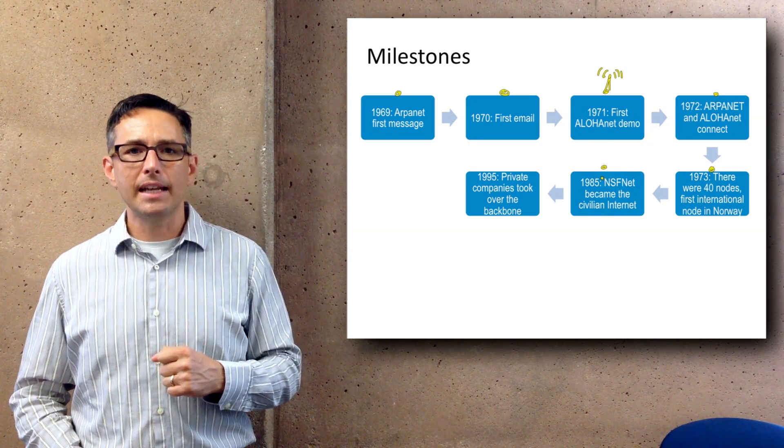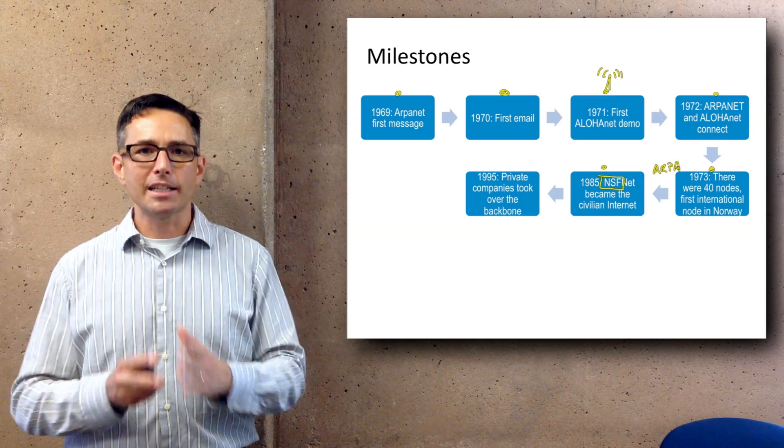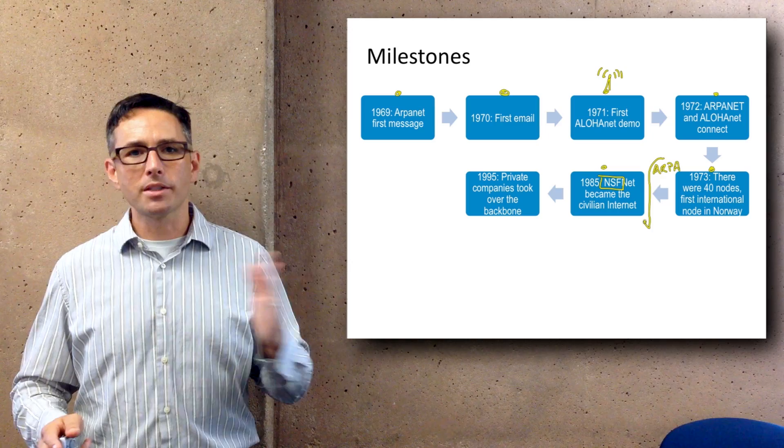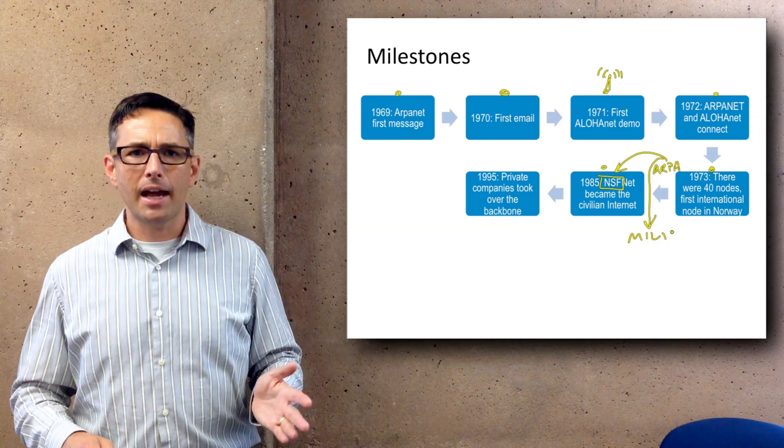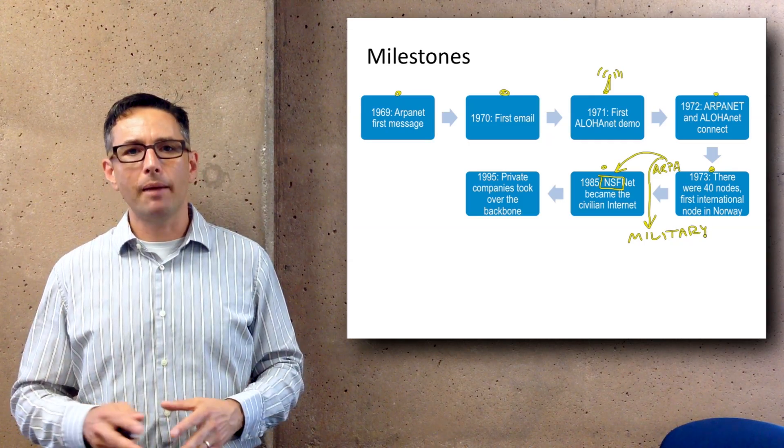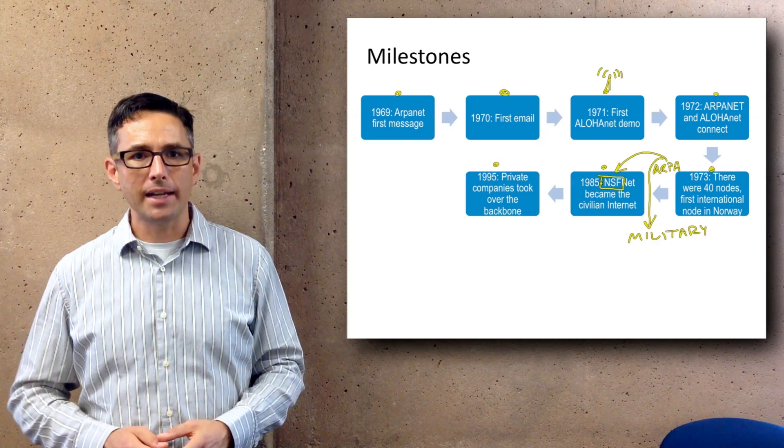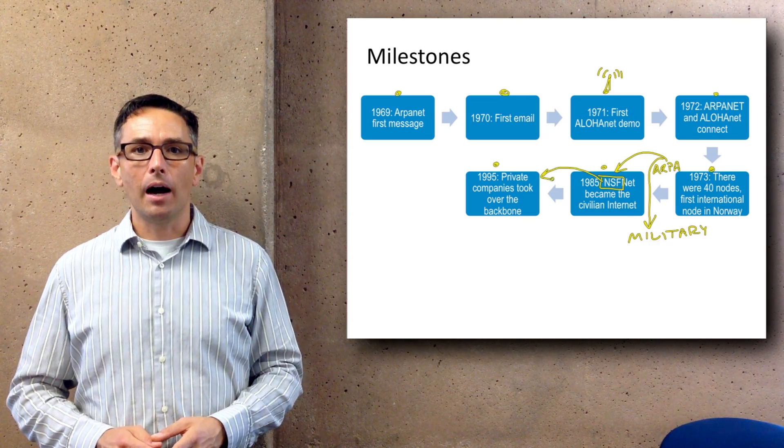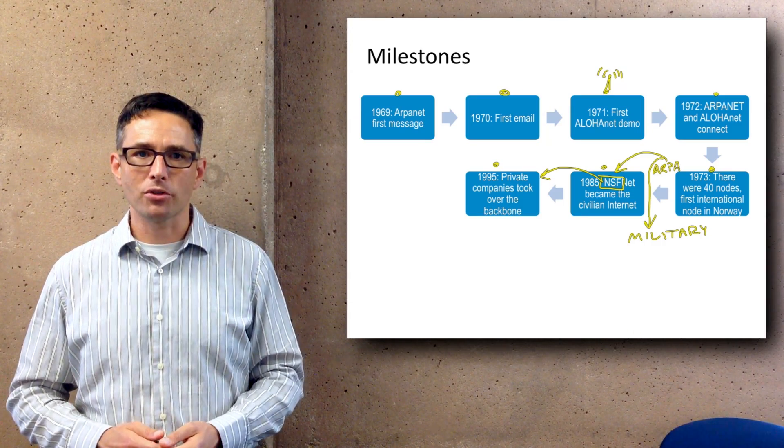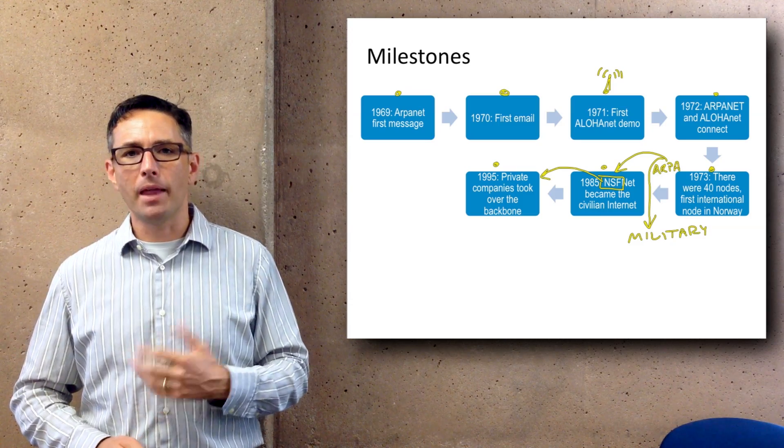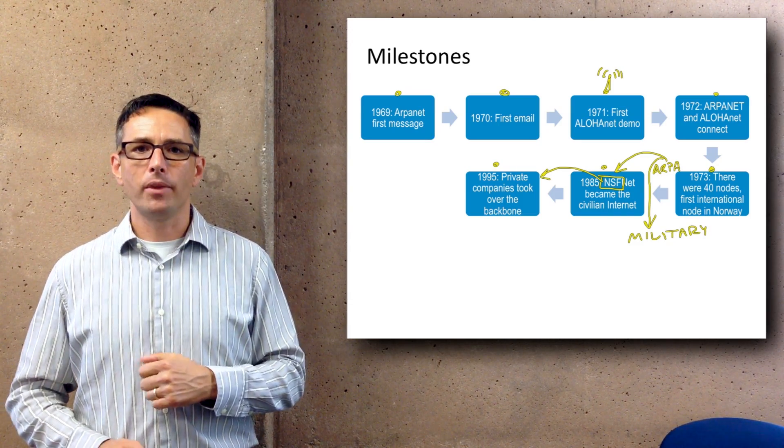Twelve years later in 1985, the ARPANET that was in existence got split into two separate networks. One was the military side, the other was the civilian side. The military side branched off; the civilian side became what's known as NSF Net and became the civilian internet. That continued growing until 1995, at which point the backbone was transitioned to private companies and has been managed by commercial companies from then on. From then on, the internet has had a structure similar to what we see in 2014.